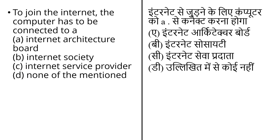The next question is: to join the Internet, the computer has to be connected to what? The first option is Internet Architecture Board, or IAB. IAB is a community of the Internet Engineering Task Force and the advisory body of the Internet Society. Its responsibilities include architectural oversight of IETF activities and Internet standard process oversight and appeal.